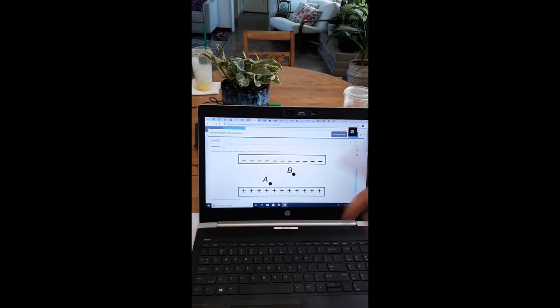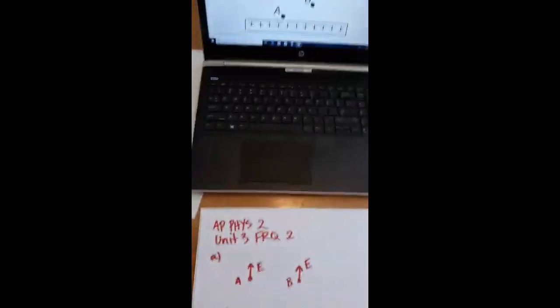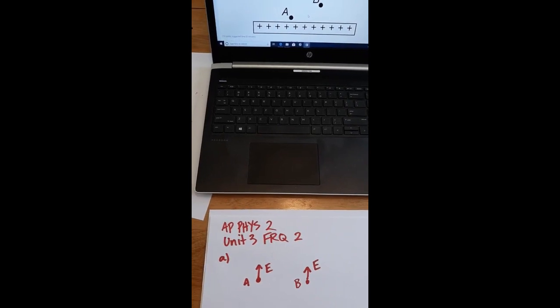Similarly, at B, if I put it here, it would go up. And so there's your answer. You have an equal amount of electric field strength at both of those points, and it's directed upward in either case. Alright, let's look at Part B.